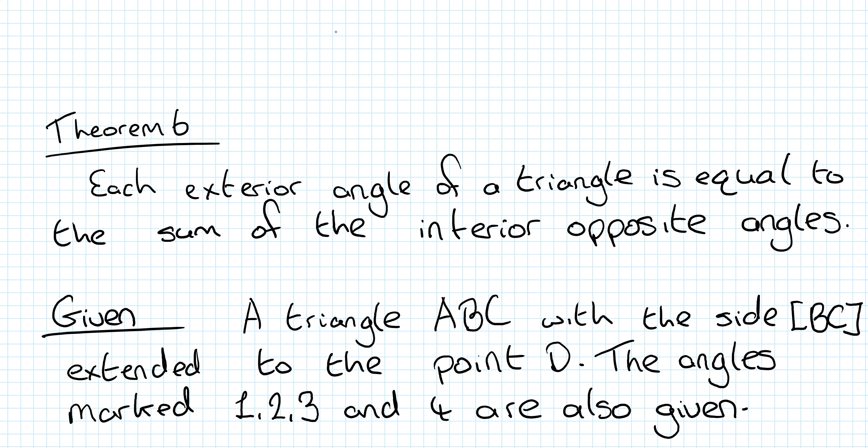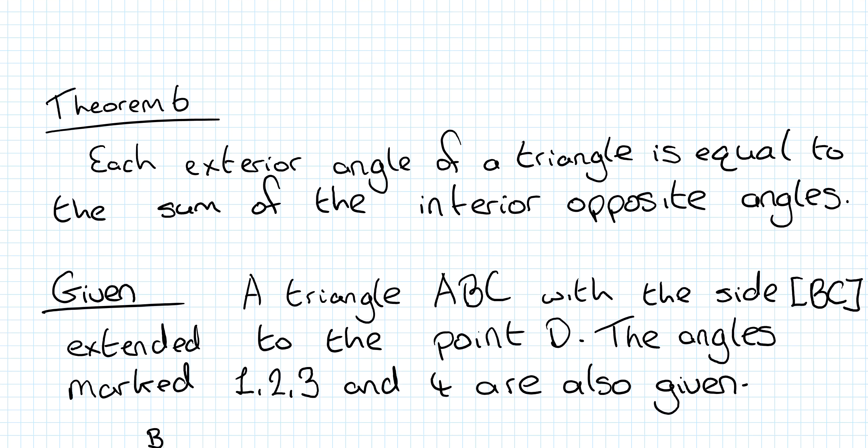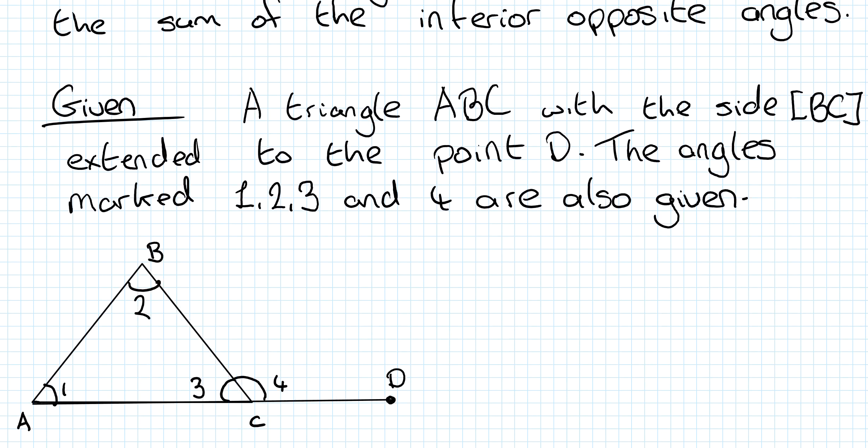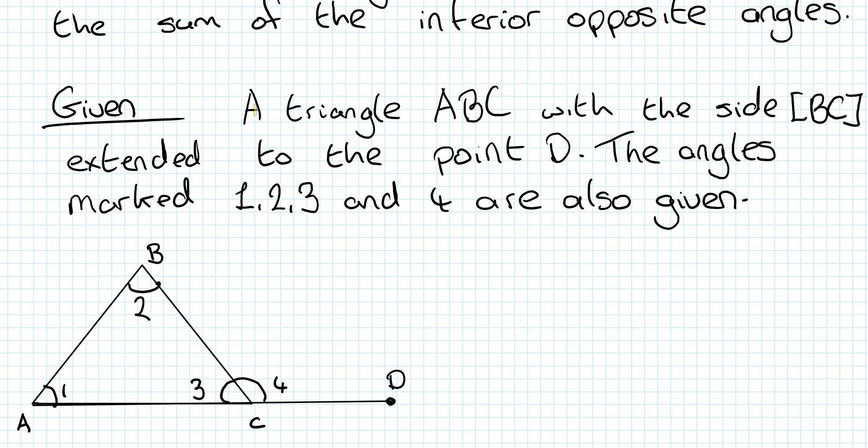Well, let's look at it a little bit more formally. So you'll again be given a section that says Given, and you'll have to write in a triangle ABC with the side BC extended to the point D, and the angles 1, 2, 3, and 4 will also be given. So what that looks like, you will draw, and yes it says Given, but you're going to have to fill in Given. Draw a triangle, extend one edge, and mark in the angles 1, 2, 3, and 4.